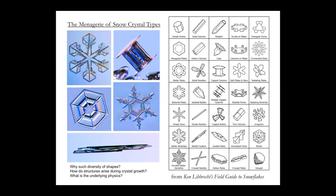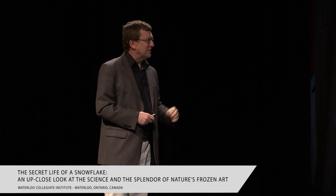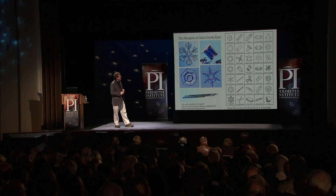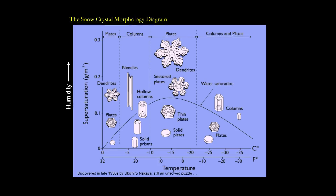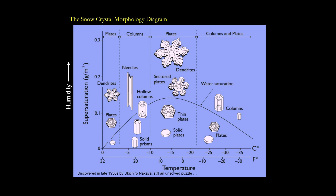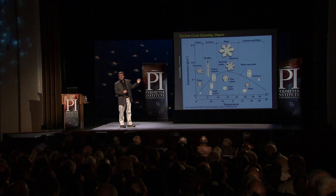It all really comes back to the morphology diagram — this is the Rosetta Stone. All these crazy crystal shapes just see different combinations of conditions as they fall. A cloud is a crazy place: it can be warm on one side and cold on the other. If you understand the morphology diagram, you can understand the rest of it. But we don't understand it, so it's a problem. I spend a lot of my time trying to figure this out.